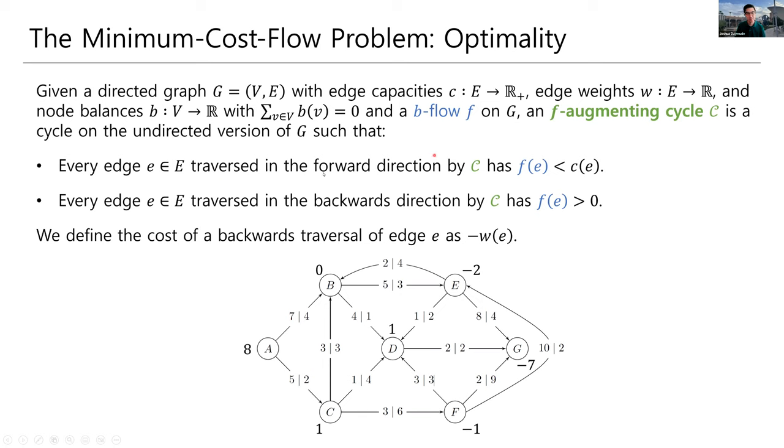So here, we're allowed to go forwards on an edge if that edge has some flow room left over, right? If there's some capacity left over, because there's strictly less flow than there was capacity. And we're allowed to go backwards if there's positive flow on the edge.